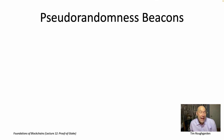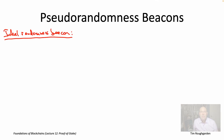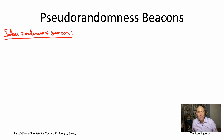The point of this video is to relax an unreasonable assumption we've been making over the past few videos. Namely, up to this point, we've been assuming that a blockchain protocol has access to an ideal randomness beacon. This is just perfect randomness falling from the sky — the assumption is that this beacon periodically, maybe once every second or once every 10 seconds, emits independent, uniform randomness.